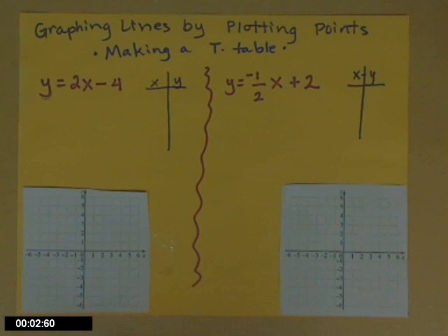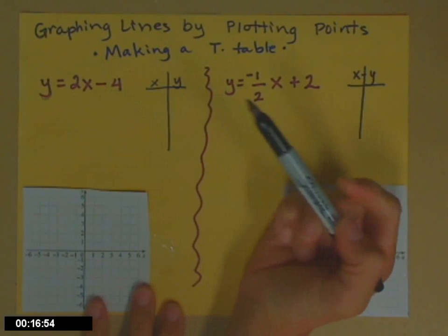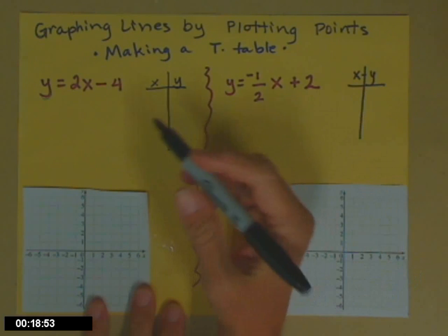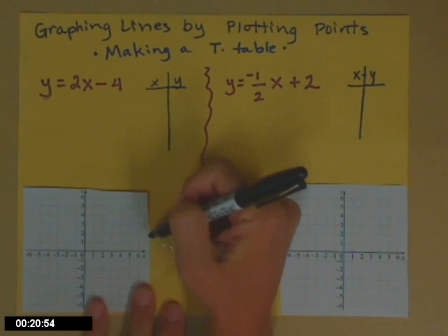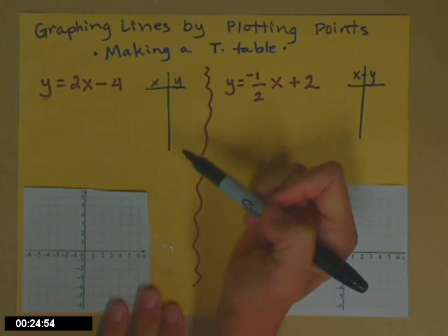So the first way we usually start thinking about graphing is by making a t-table. We're going to work on graphing lines by plotting points that we find in our t-table. So I have two examples here. The first one, y equals 2x minus 4. Remember, the graph represents all of the solution values, all of the solutions to this equation.